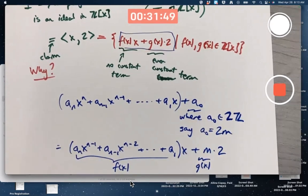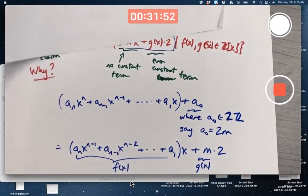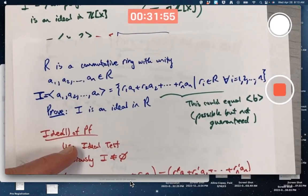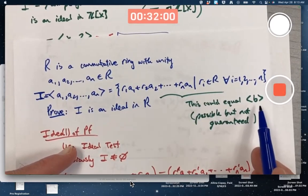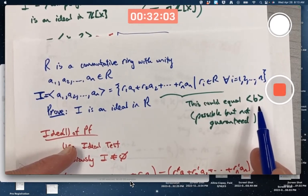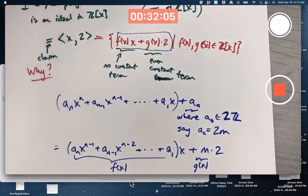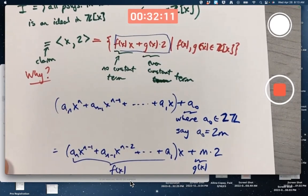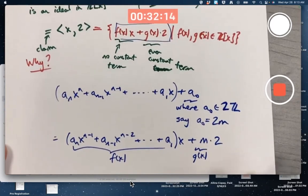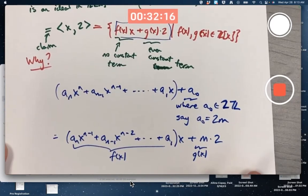Going back to the question I asked or talked about a few minutes ago: is it possible an ideal like this could equal some principal ideal for some element b? I said in general that is possible, though not guaranteed. Does that happen here? Is it possible this is equal to a principal ideal generated by some polynomial? Is there a polynomial where every polynomial in this form is a polynomial multiple of that one polynomial?